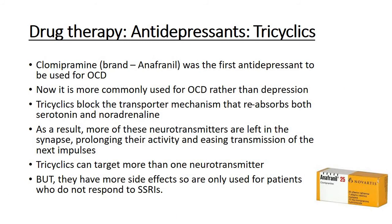Another drug therapy we're looking at and making notes on are tricyclics — another type of antidepressant. Clomipramine, or Anafranil as its branded name, was the first antidepressant to be used for OCD. This is interesting because, as we'll see when we move into next year looking at concepts such as comorbidity, depression and OCD overlap. Often someone who suffers with OCD or depression may have an overlap in their symptoms. Someone suffering with depression may also suffer with anxiety — they're often paired together. So we can often see that drugs effective for other mental disorders can also be effective elsewhere. Clomipramine is a good example and it's now actually more commonly used for OCD rather than depression.